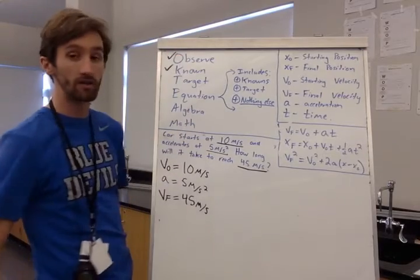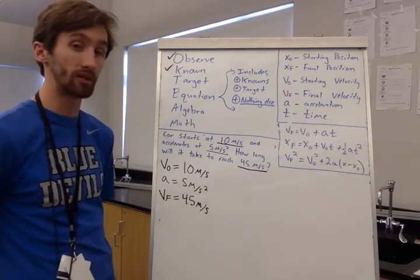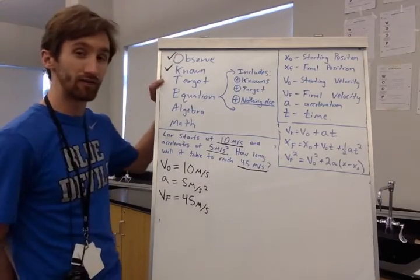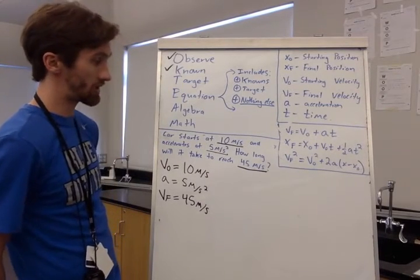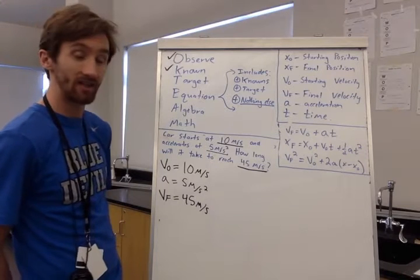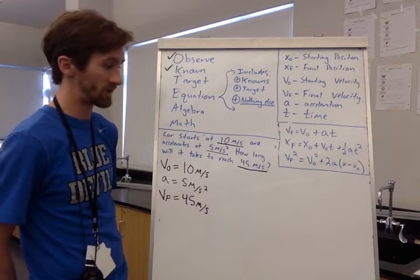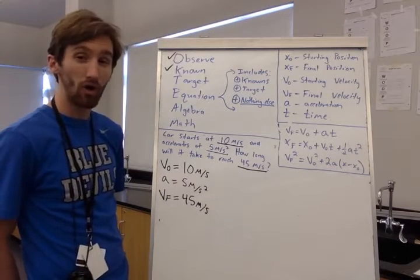So I know all of my knowns. What has the problem given me? Now I have to figure out what are my targets or what is my target? So the car starts at 10 meters per second. It accelerates at 5 meters per second squared. How long will it take?